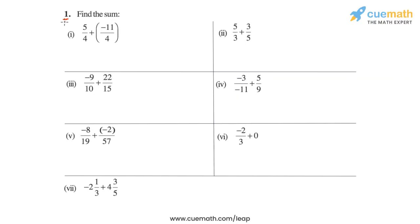In question 1 of this exercise, we have to find the sum of rational numbers in each of the following. To do this problem, we will make use of the fact that rational numbers can be added just like how we add fractions. So to calculate each sum, we will take the two rational numbers given, write equivalent rational numbers for them with the same denominator, and then simply add the numerators to find the sum.